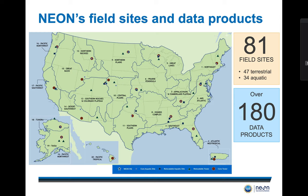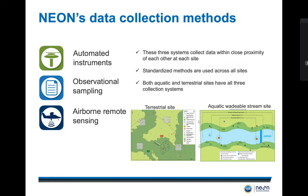So where and how does NEON collect data? NEON statistically partitioned the continental U.S., Hawaii, and Puerto Rico into 20 ecoclimatic domains that represent distinct regions of vegetation, landforms, and ecosystem dynamics to capture the full range of U.S. ecological and climatic diversity. NEON is designed to collect data at 81 terrestrial and freshwater aquatic field sites distributed across the 20 domains throughout the United States. NEON data is a combination of three different collection systems: automated instruments, observational sampling in the field, and airborne remote sensing.